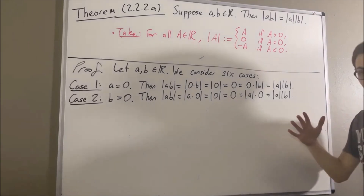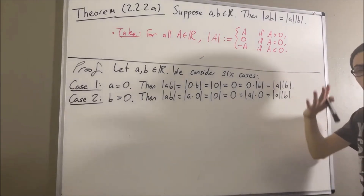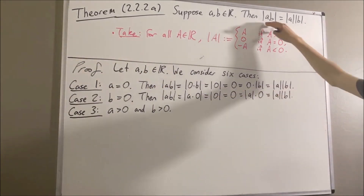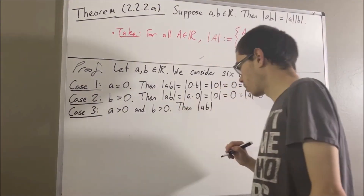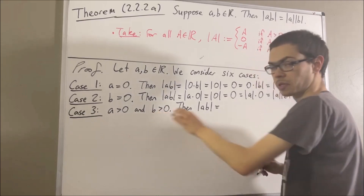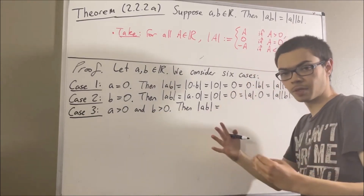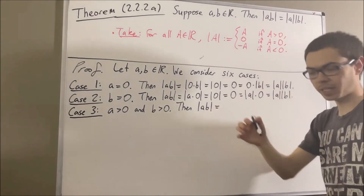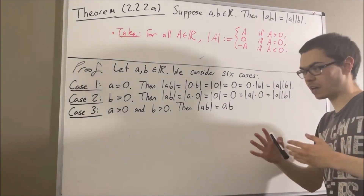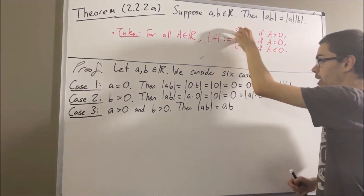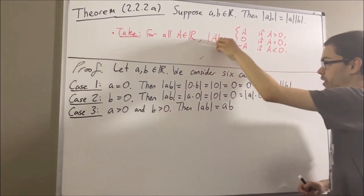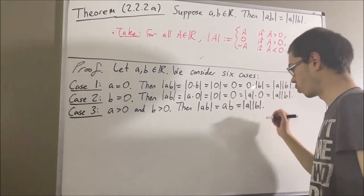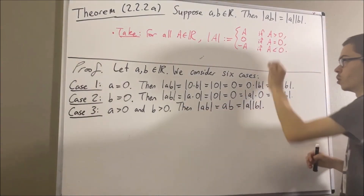Now let's move on to the next case, which is where A and B are both greater than zero. Again, we're going to establish a chain of equalities showing that these two are equal. Since A and B are both greater than zero, this implies A times B is greater than zero. So by definition of absolute value, the absolute value of A times B is equal to A times B. Also by definition of absolute value, since A is greater than zero the absolute value of A is equal to A, and since B is greater than zero the absolute value of B is equal to B. So we can replace the A here with the absolute value of A and replace the B here with the absolute value of B, establishing that these two are equal.